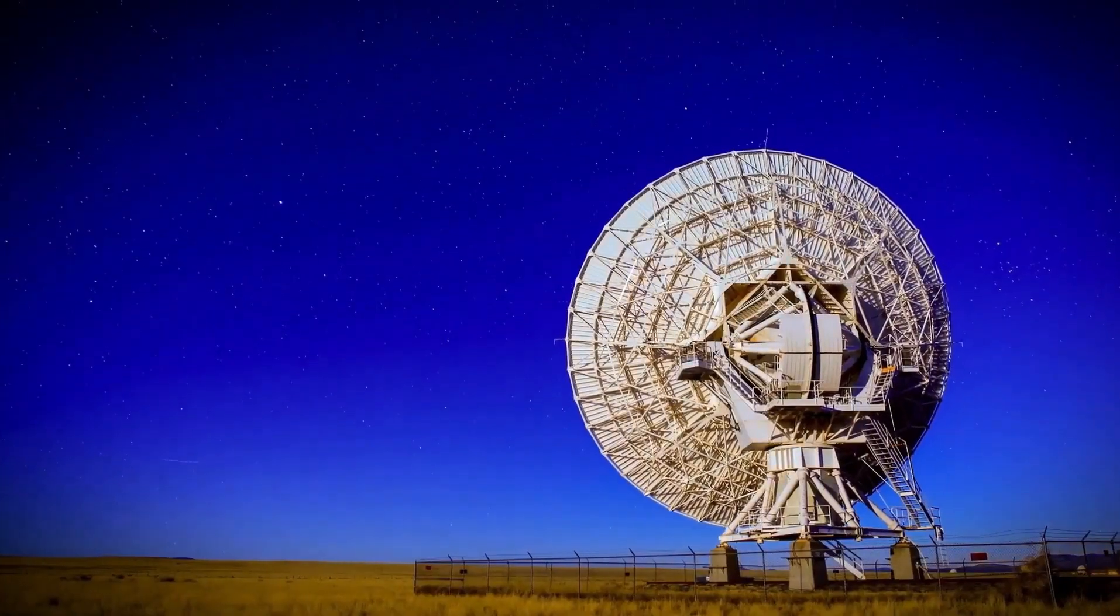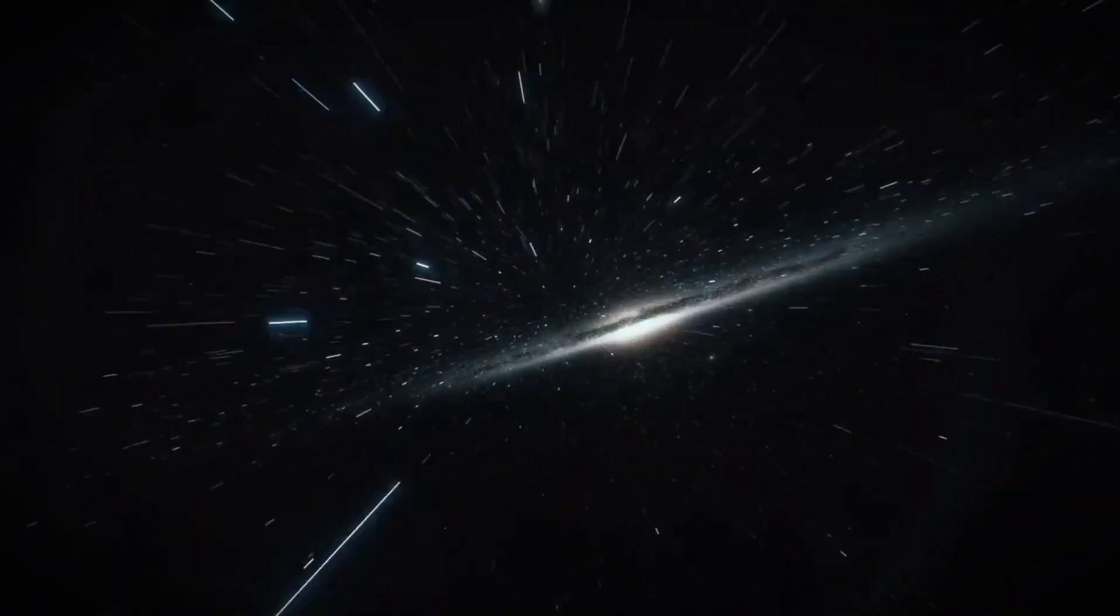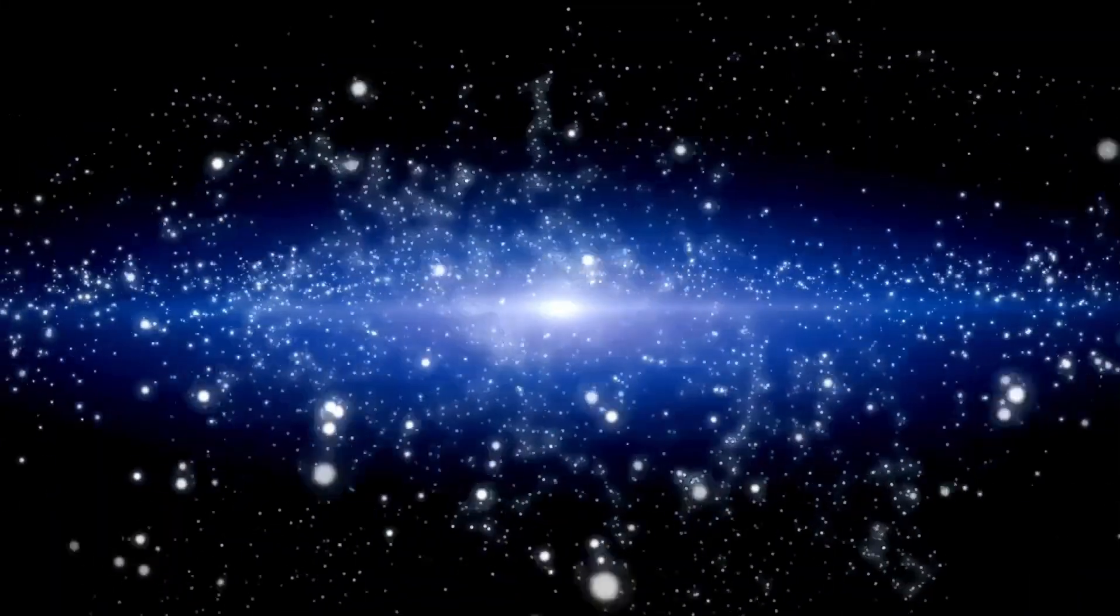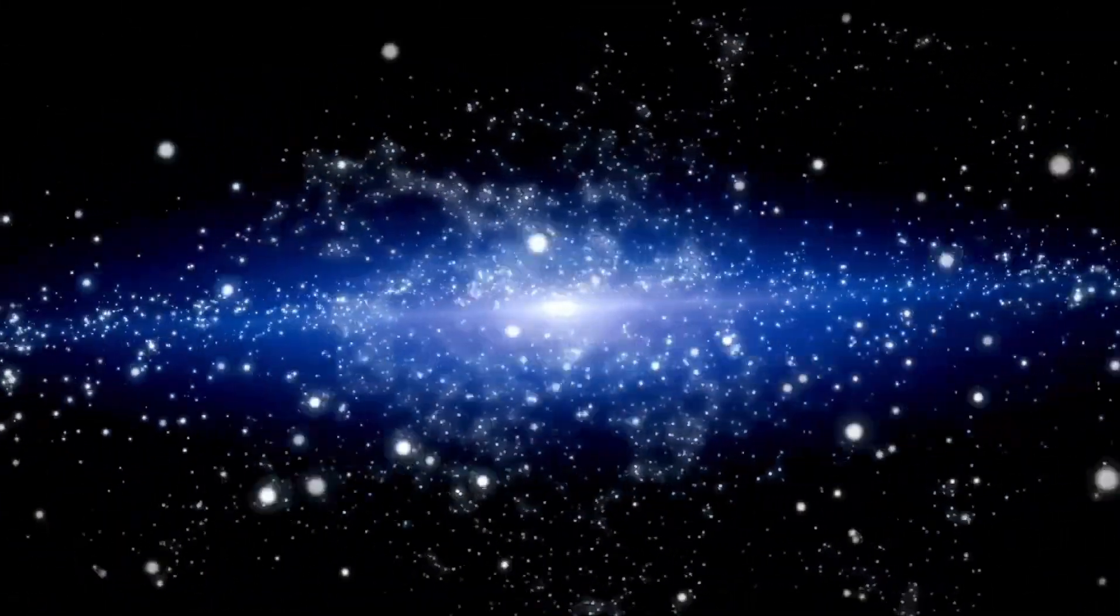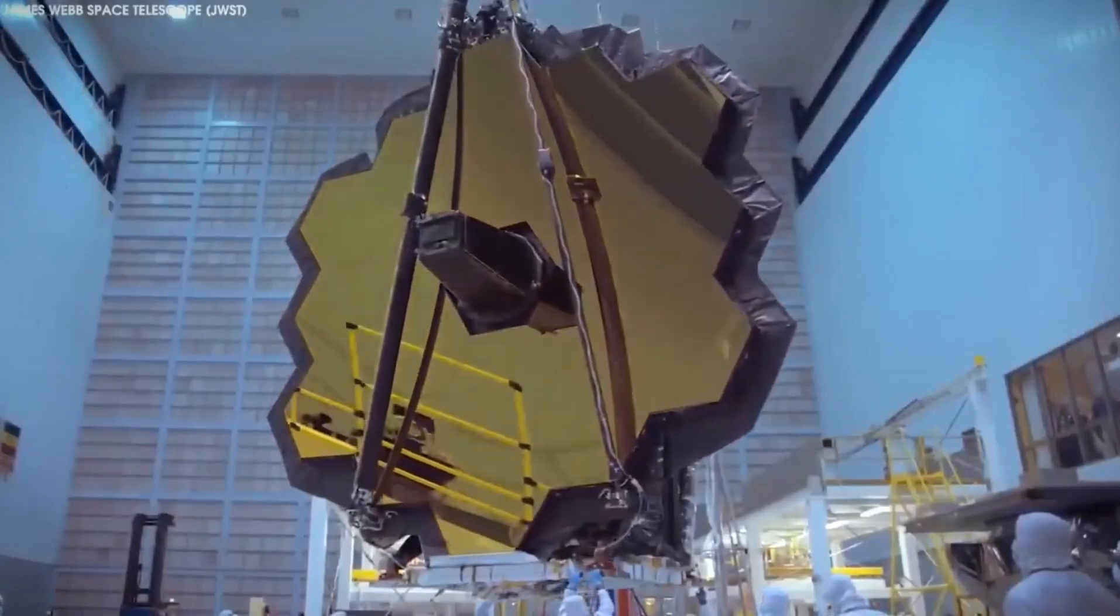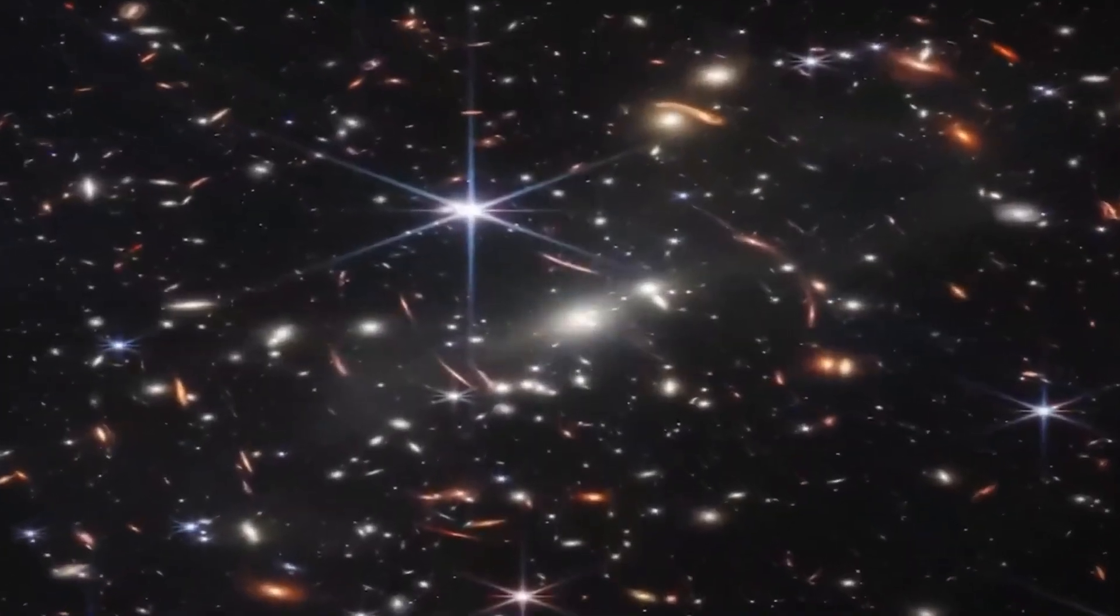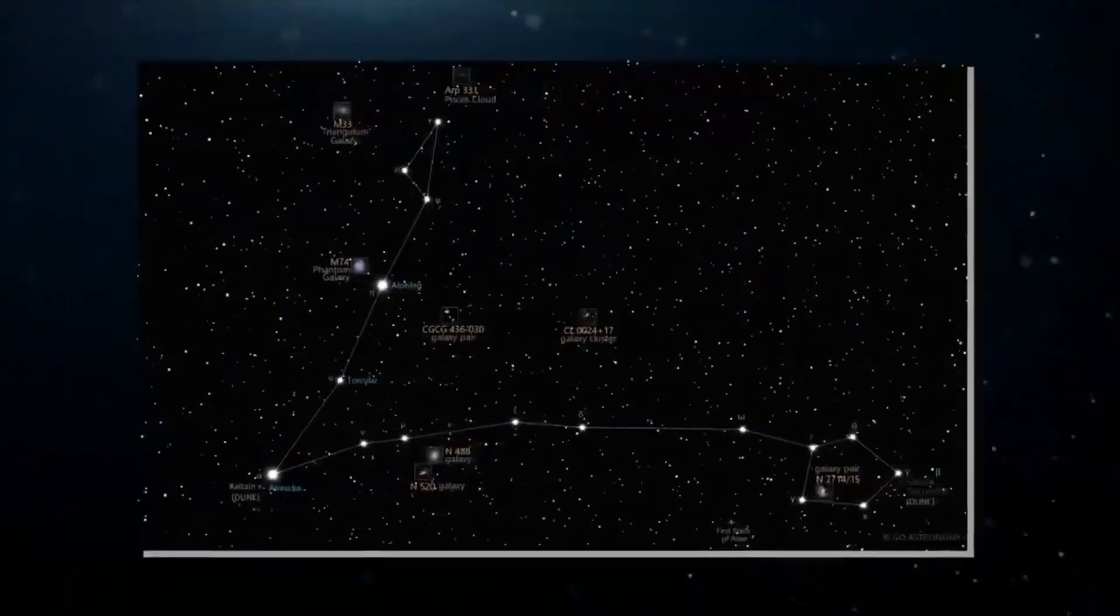One of the wonders we can find in the universe are black holes. These are cosmic entities that originate from the gravitational collapse of massive stars. When a star exhausts its nuclear fuel, it experiences a cataclysm known as a supernova. During this process, the outer layers of the star are ejected into space, leaving behind a core.